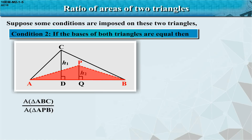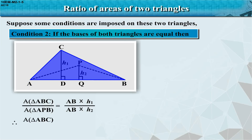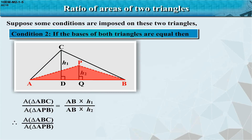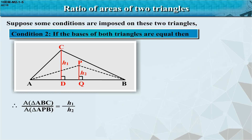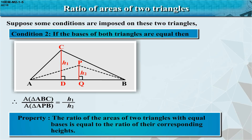If the bases of both triangles are equal, then area of triangle APB / area of triangle ABC = (AB × H1) / (AB × H2). Therefore, area of triangle ABC / area of triangle APB = H1 / H2. Property: the ratio of the areas of two triangles with equal bases is equal to the ratio of their corresponding heights.